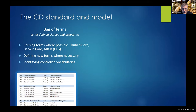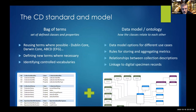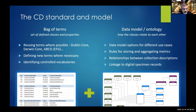There are two main streams of development: the data standard itself — a set of defined classes and properties, reusing terms from existing standards where possible and defining new terms where necessary — and a data model or ontology to support the use of the standard, defining how classes relate to each other, how numeric metrics are used, how collection descriptions can be linked, and how those link to digital specimen records.